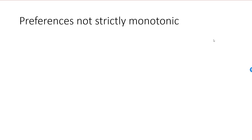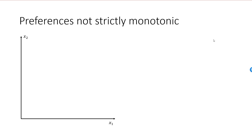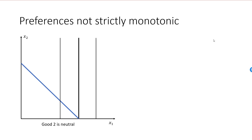Let's also have a look at a few examples where preferences are not strictly monotonic. My first example illustrates the case when good 2 is neutral, while good 1 is desired. Preferences are then monotonic, but not strictly monotonic. If good 2 is neutral, then all indifference curves will be vertical lines. Better bundles are further to the right. The optimal bundle will be the boundary bundle X1 star, X2 star, where the consumer, not surprisingly, spends her entire income on good 1.